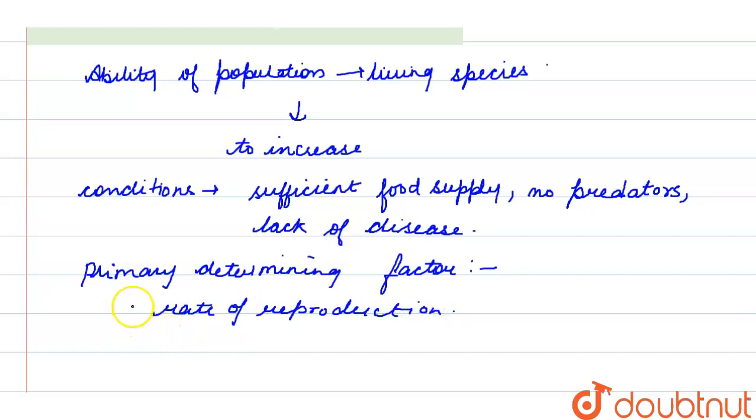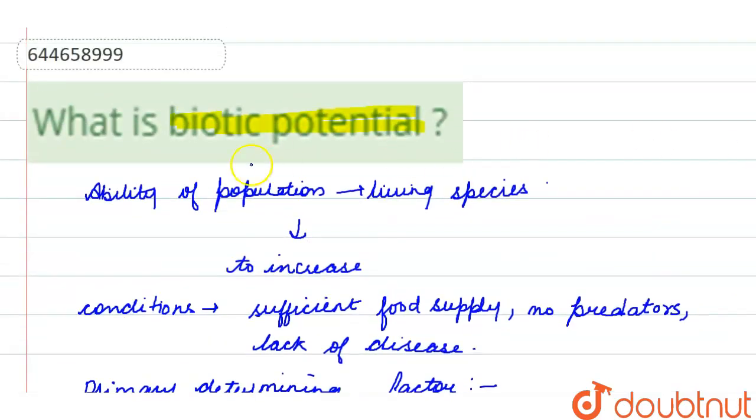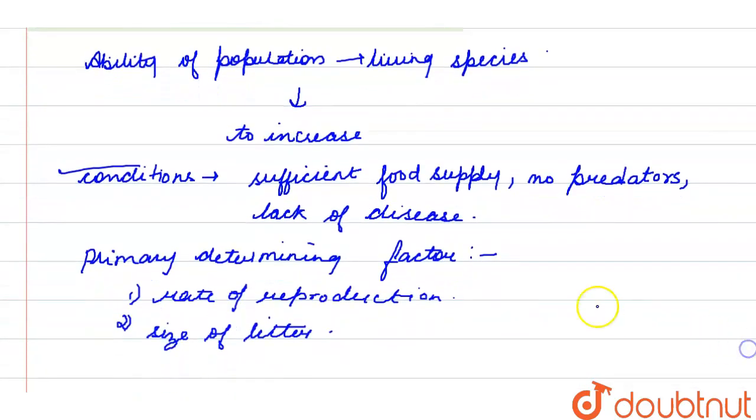And second is size of litter. So if we talk about primary determining factors, those are two: rate of reproduction and size of litter. I hope I have solved your question, thank you.